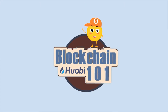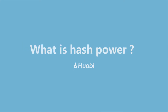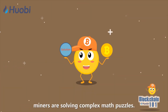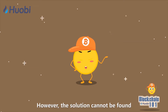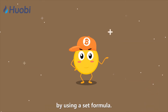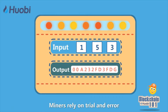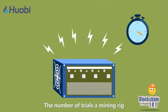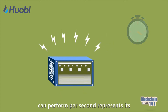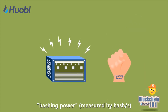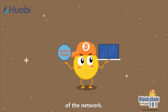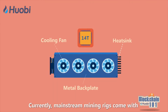One minute a day: blockchain 101 — what is hash power? During the mining process, miners are solving complex math puzzles. However, the solution cannot be found by using a set formula. Miners rely on trial and error to find the valid hash. The number of trials a mining rig can perform per second represents its hashing power. Simply put, hashing power is the processing power of the network.